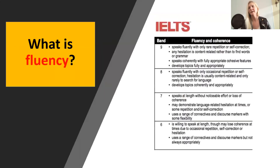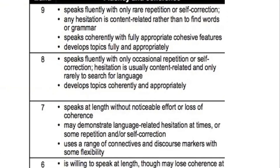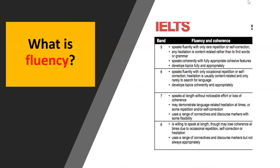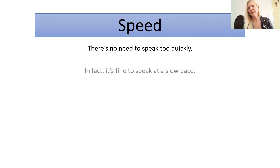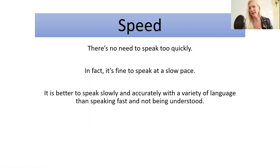What is fluency and how does the examiner assess your level? Let's take a look at the band descriptors where it says for band score seven: speak at length without noticeable effort or loss of coherence. There may be some hesitation and you are using connectives. This basically means that even if you hesitate, you're able to keep going and you are coherent — understandable and logical, not jumping from one topic to the next. The person can follow the structure of what you're saying. There's really no need to speak quickly. It's better to speak slowly, more accurately, and using the correct grammar.